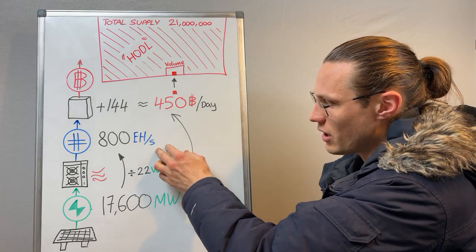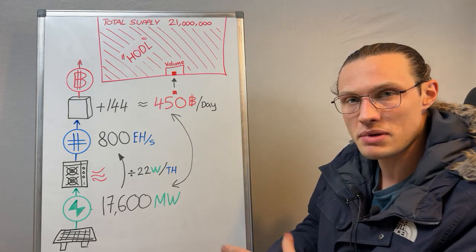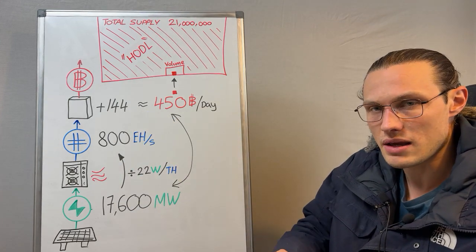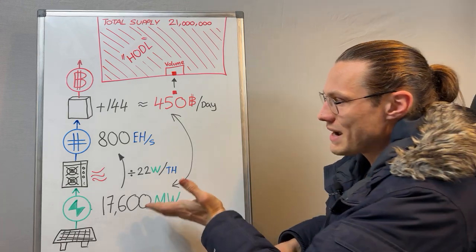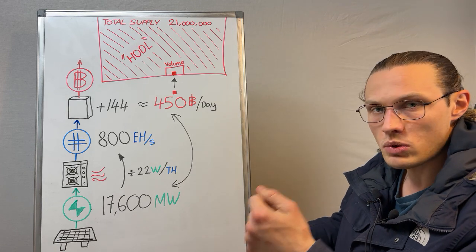And all of that excess compute power would allow you to fight for your share of the 450 plus Bitcoin that is distributed to those 144 blocks per day. And all of these components are all mathematically linked. There's no opinion in this. You literally fight for what's yours.